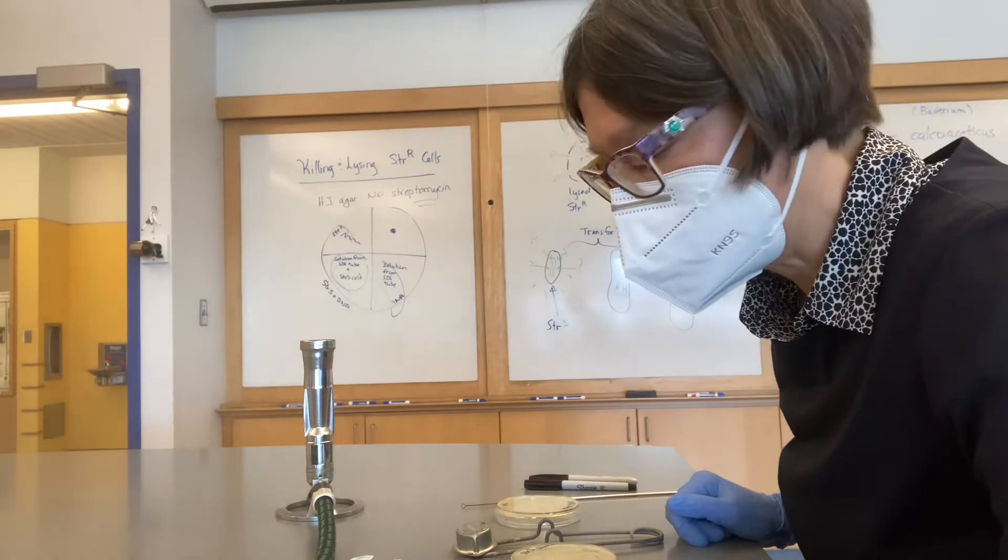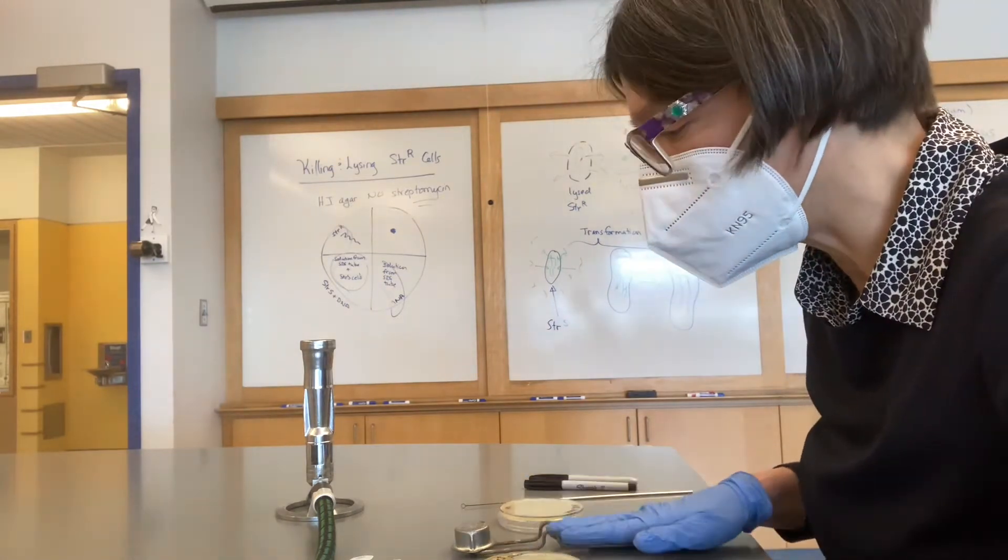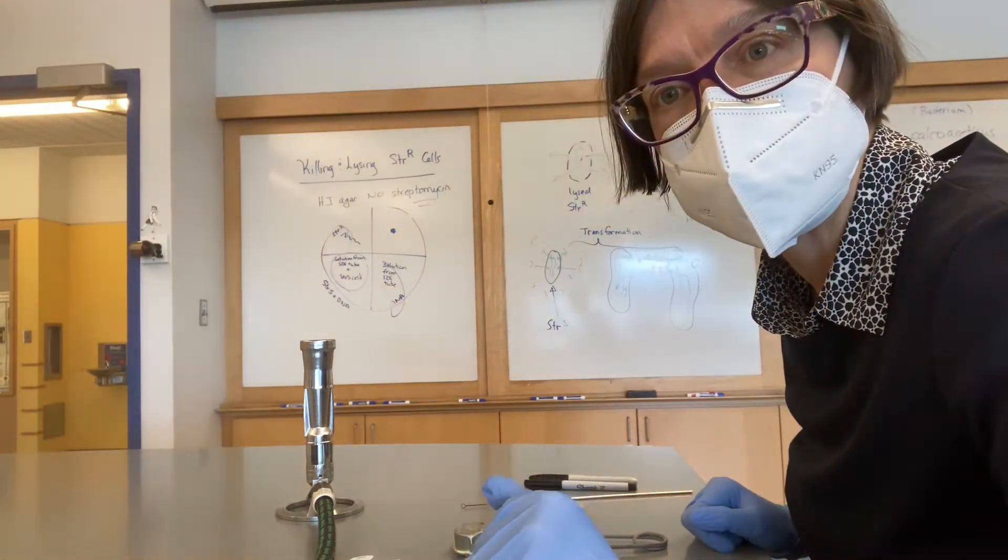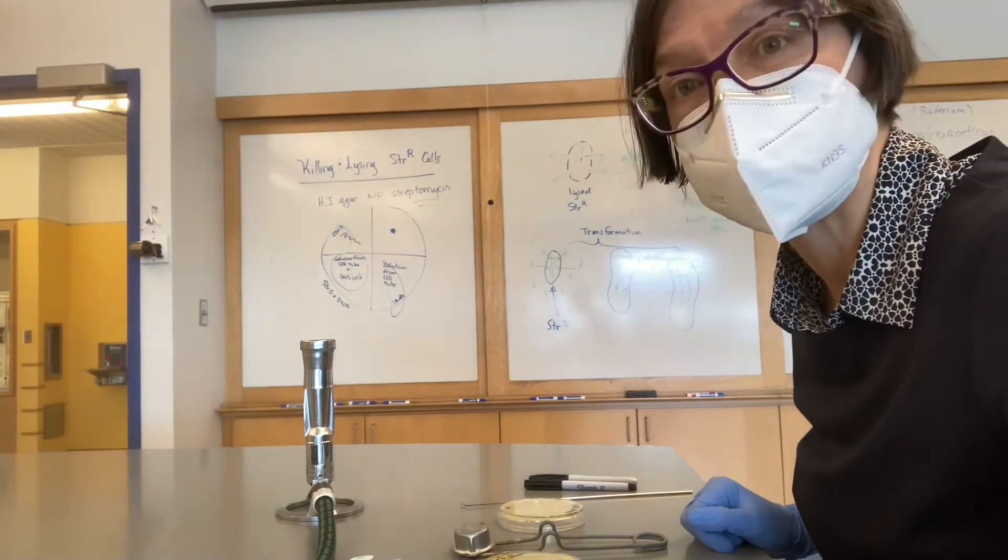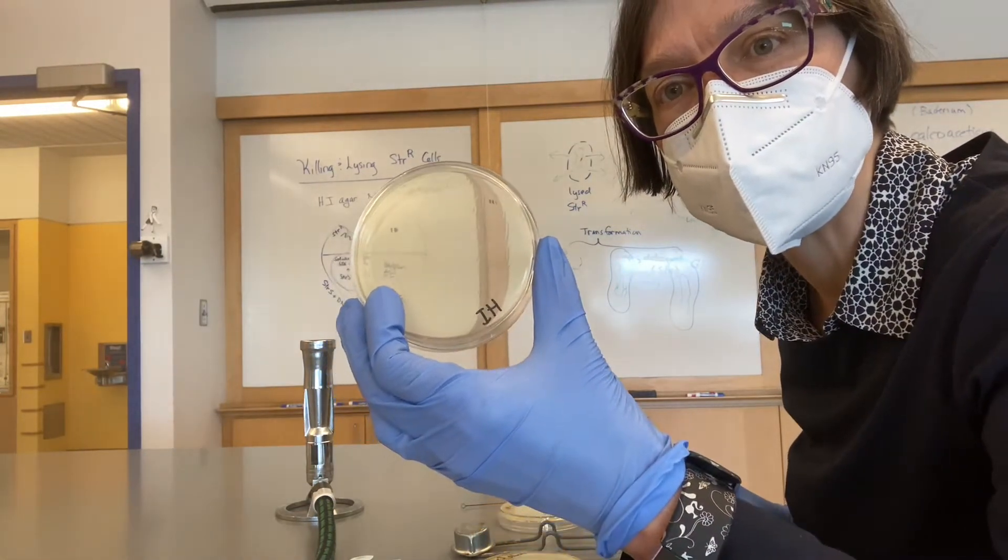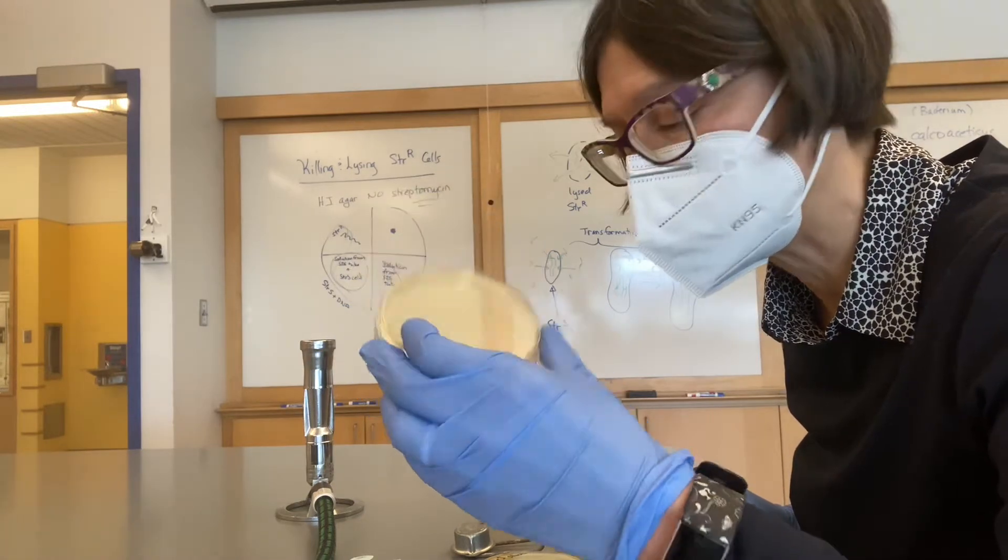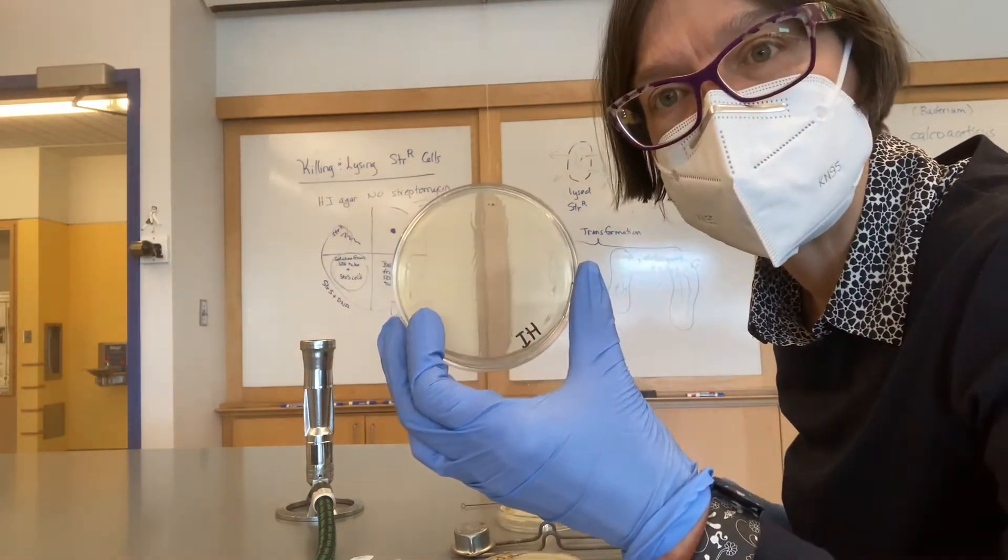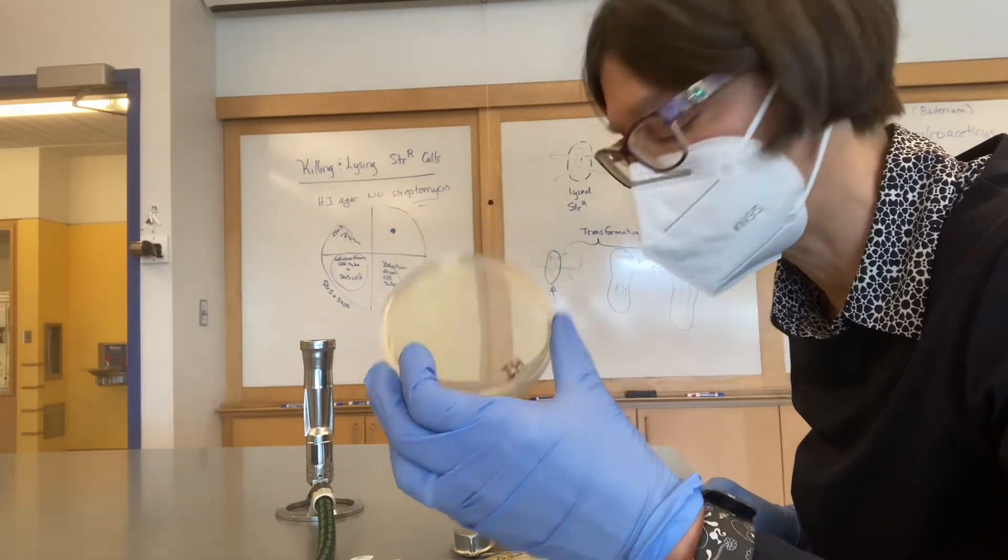To start this experiment, you can take a look and see the different pieces of equipment that we have and the different supplies. So what we have is an agar plate labeled HI for heart infusion. It's a growth medium that Acinetobacter species like to grow on.